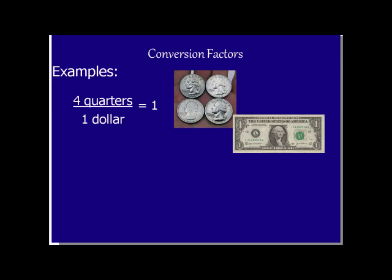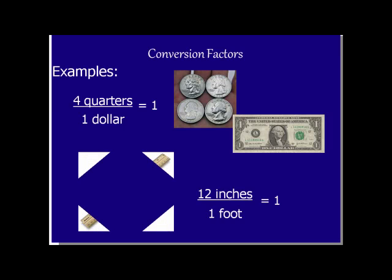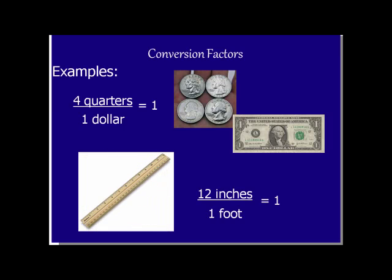Now obviously we don't use quarters and dollars in chemistry, but we do take measurements. So let's look at if I were to use a ruler. Now this isn't the metric system, but something you are familiar with. We can look at the relationship between inches and feet. So we know that twelve inches is the same thing as saying that I have one foot. And again, we can put twelve inches in the numerator, one foot in the denominator. Or we can flip this conversion factor and have one foot in the numerator and twelve inches in the denominator.